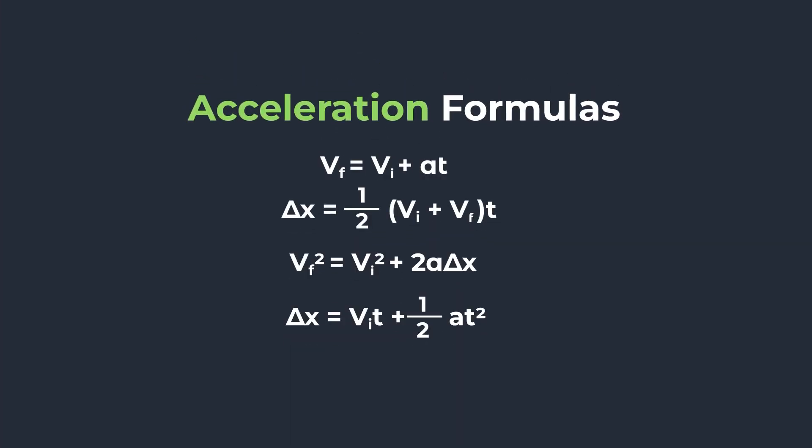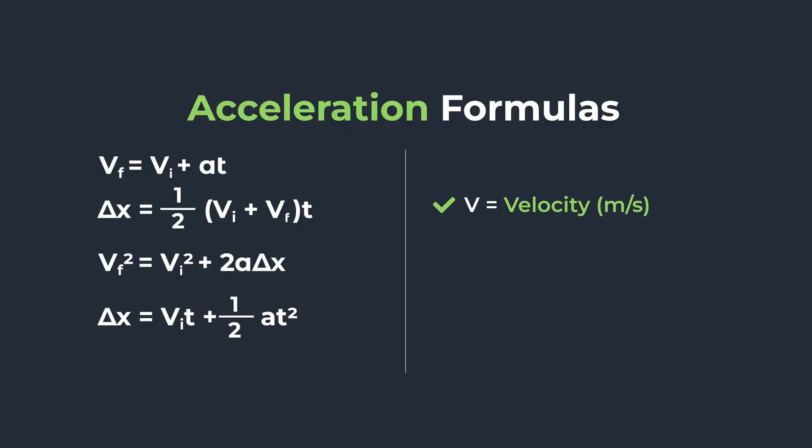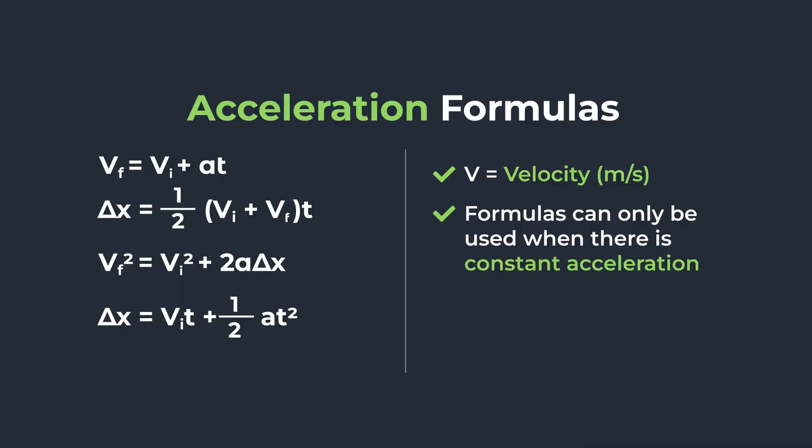For instance, let's take the acceleration formulas as an example. You should know that V stands for velocity and its units are meters per second. You should also know that this set of formulas can only be used when there's a constant acceleration. We have four formulas that all relate to acceleration, velocity, and time. So how do we choose which formula to use? If you look closely, the first formula is missing the variable for distance traveled. So if distance traveled is irrelevant in a question, you know it's best to use the first formula.